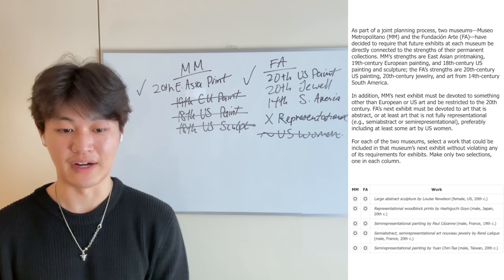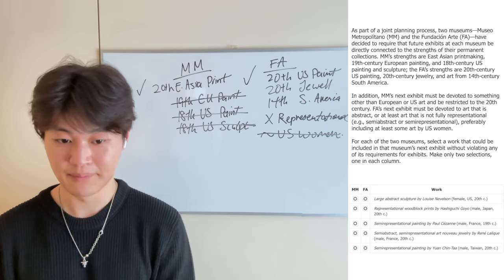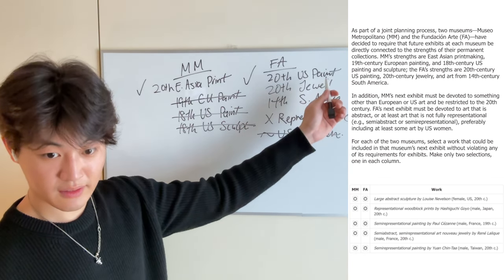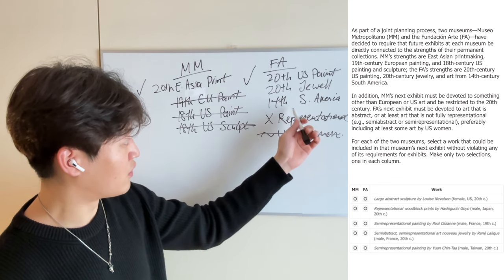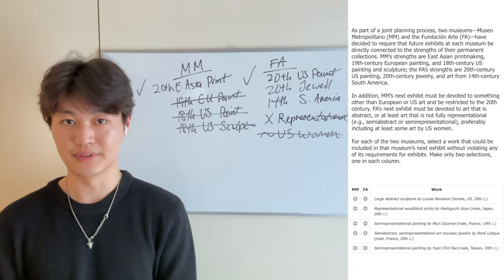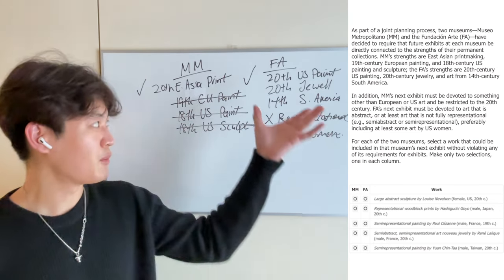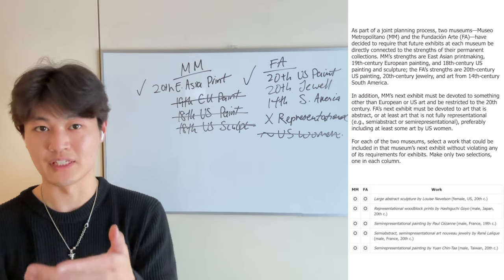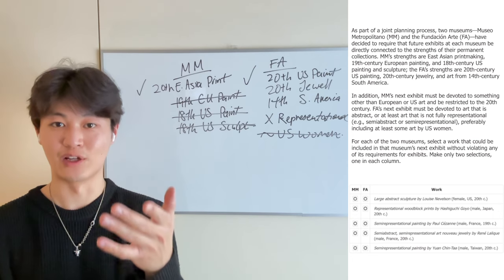Let's just run through the final one: a semi-representational painting by Yuan Chin Ta, male from Taiwan in the 20th century. For MM, we need prints — this is a painting, so that's not going to work. For FA, it's a painting but this artist is from Taiwan. So it seems to violate the rules. What do we learn here? We just need to organize the problem in a somewhat regimented fashion — a structure we can work with — and then make logical inferences based upon the requirements. The inferences aren't that deep. With that, we can answer these logic game type questions.